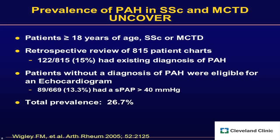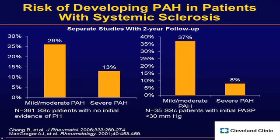Echo is our best screening tool but not the gold standard, and we don't know whether these patients also have underlying interstitial lung disease or diastolic or systolic dysfunction. In studies where patients underwent right heart catheterization, the largest — 361 patients — found nearly a quarter had mild-to-moderate PAH and about 13% had severe PAH, with similar data in a smaller 35-patient study. We now believe the prevalence of significant PAH in scleroderma is somewhere between 10% and 15%.